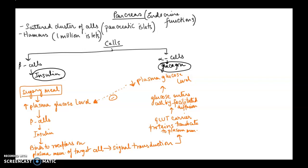We are looking at the endocrine functions of the pancreas. Scattered throughout the pancreas are clusters of cells called pancreatic islets — in humans there are about one million islet cells. The beta cells release a hormone called insulin, which helps to lower blood glucose level. For example, if we eat a very sugary meal, blood plasma glucose level will go up, and that will trigger the beta cells of the pancreas to release insulin.